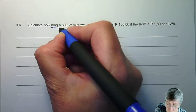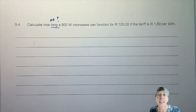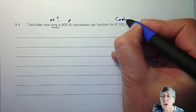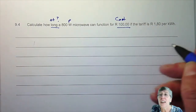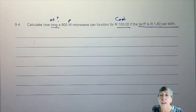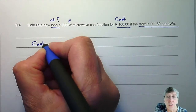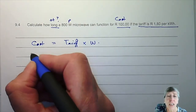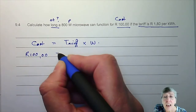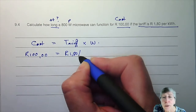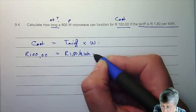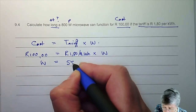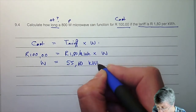In the second question, they're asking us how long — so we are looking for delta T. They give us a microwave oven with its power, a total cost of one hundred rand, and the tariff. Cost equals tariff times energy used: one hundred rand divided by one rand eighty per kilowatt hour gives an energy of 55,60 kilowatt hours.